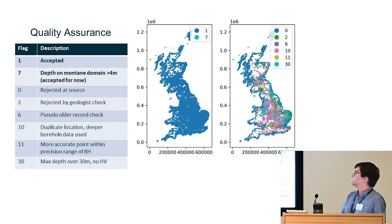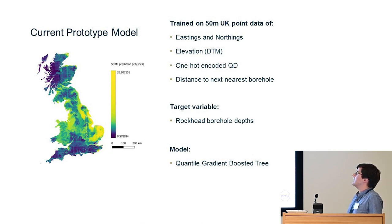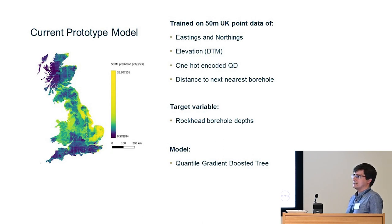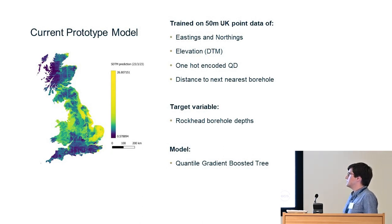With the 300,000 data points, we look at ways of modelling superficial deposit across the UK. This is the result from a current, very prototype model, where we trained it on eastings and northings, elevation, a DTM, one-hot encoded quaternary domain information, and distance to the next nearest borehole. One-hot encoded quaternary domain is essentially a yes/no answer as to what type of rock the borehole is located on — for example columns for igneous, metamorphic, and sedimentary rock, with a one in the relevant column and zeros elsewhere. Our target variable was the rockhead borehole depths only, using confirmed rockhead from a borehole. We used a quantile gradient boosted tree to produce both the map shown here and an uncertainty map, which is not yet completed.